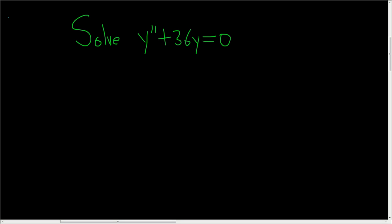Solve y double prime plus 36y equals 0. The first thing to do is write down the auxiliary or characteristic equation. Since we have y double prime, we write down m squared. Then we have plus 36, and you don't do anything with the y. This is equal to 0.